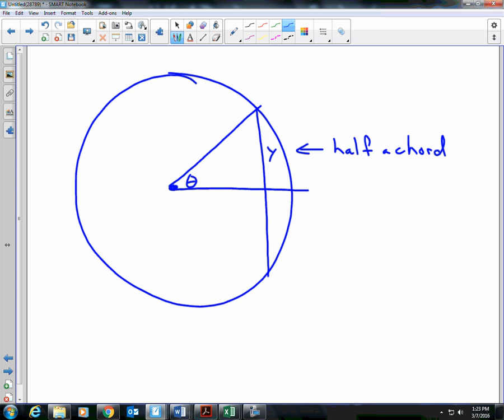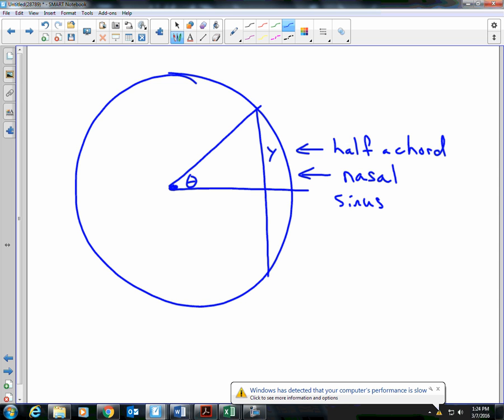So in Greek, they gave it a name, and the name meant half of a chord. And they would use that all the time to figure out certain things about distance and everything else. But here's the problem. When they translated it from Greek to Arabic, they came up with a different name. And then they tried to translate it from half-chord into Latin, and they mistranslated it. They gave it a name. Instead of calling it half-chord, they called it nasal. What is the word we use to represent sinus? They gave it the word sinus.